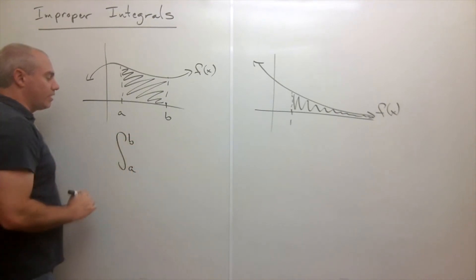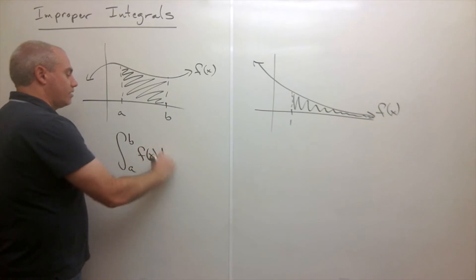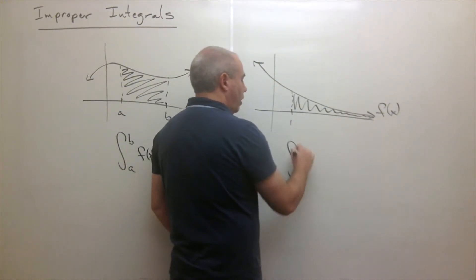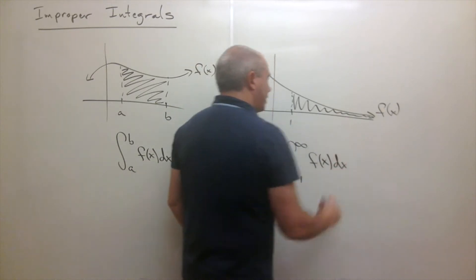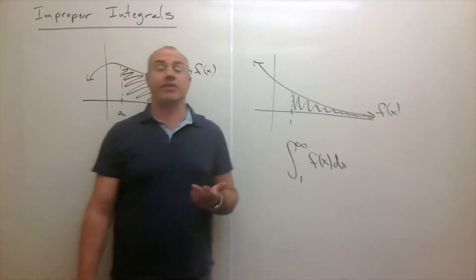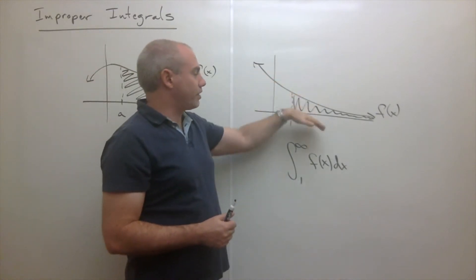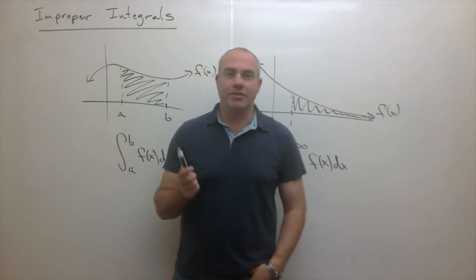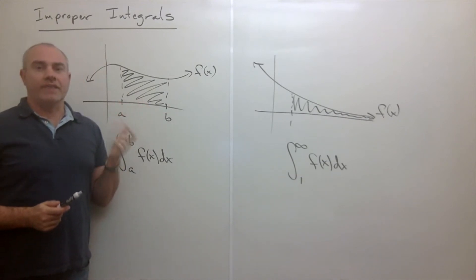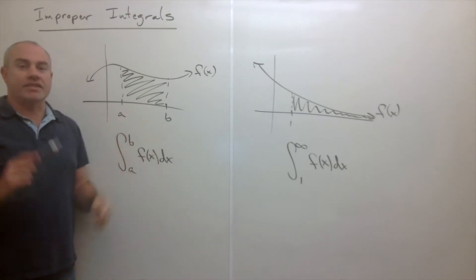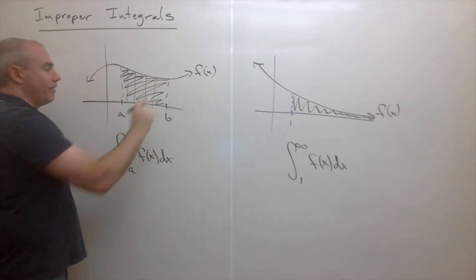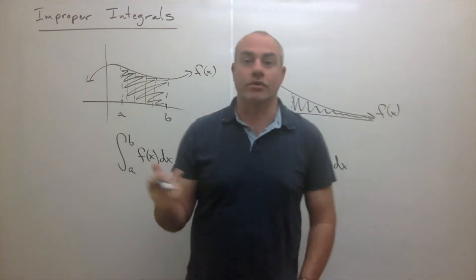We know how to compute area as long as we can take an antiderivative — we take an integral from a to b of f of x dx. So it would make sense to write the integral from one to infinity of f of x dx. When we're in the normal finite case, the way we actually get the area under a curve between a and b is to chop it up into a lot of little rectangles, add up their areas, and then let the number of rectangles go to infinity.